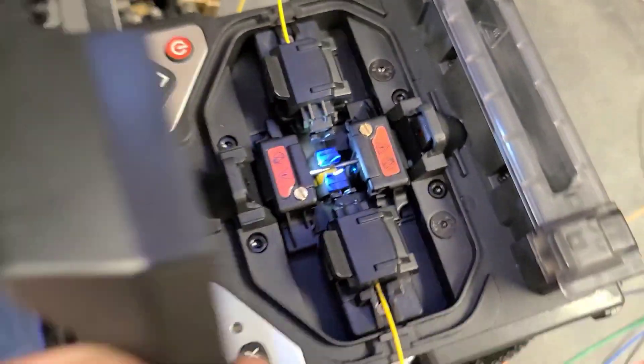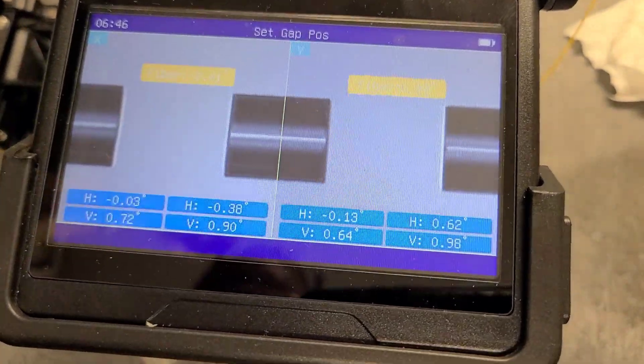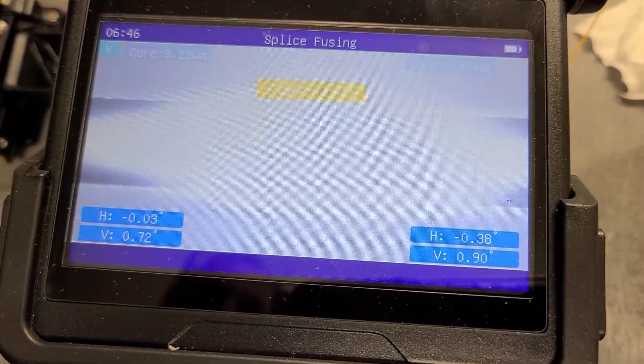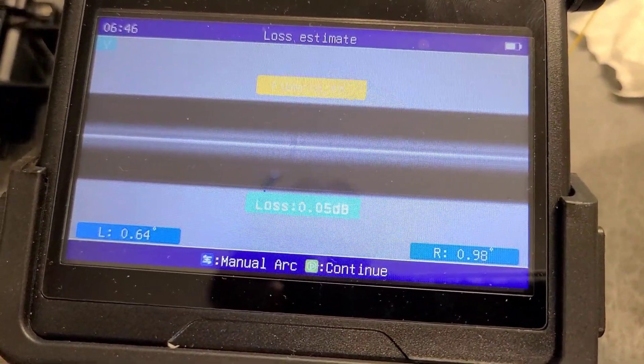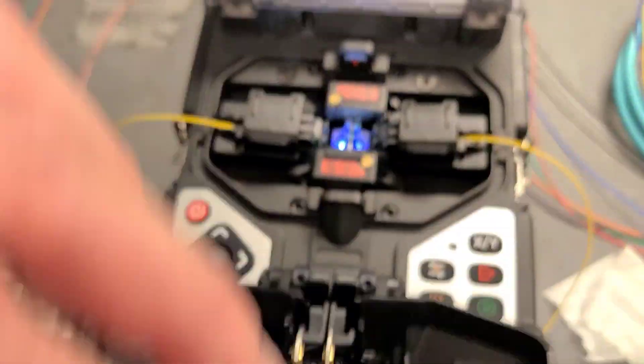And you close the top down and on your screen it'll show the two separate ends. So you fuse them together and you see your loss down here, point zero five. So then we open the top up here.